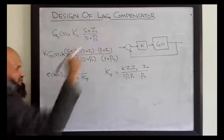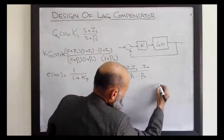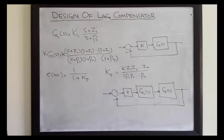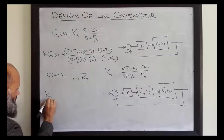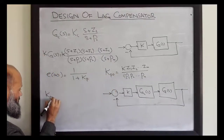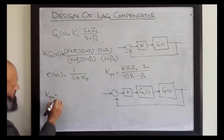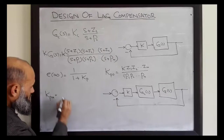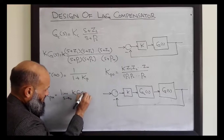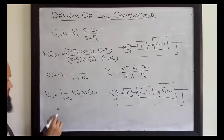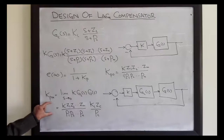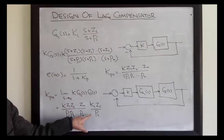If we cascade this compensator to the system, then for the system with compensator Gc(s), the new value of Kp — let's differentiate with subscripts: Kp_old and Kp_new — will be equal to the limit as s tends to 0 of Kc·Gc(s)·G(s). By augmenting this compensator, the position error constant Kp is improved.